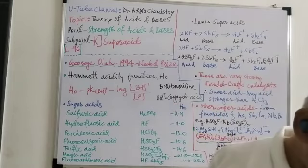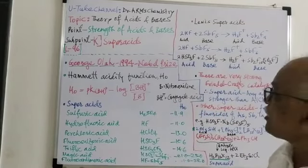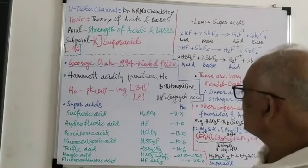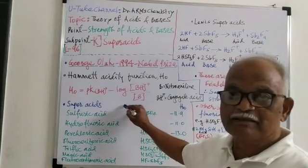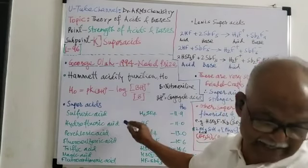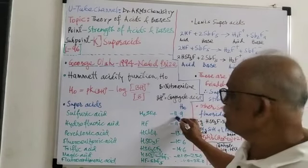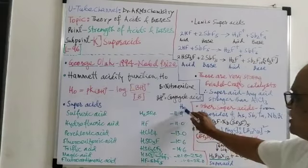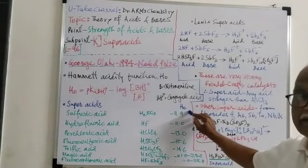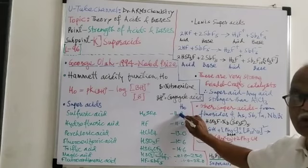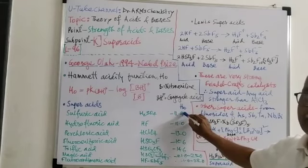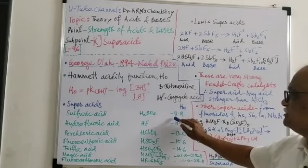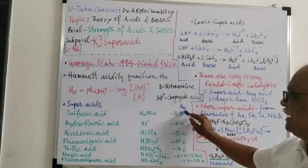Depending upon this, the strength of these acids can be understood. We can consider various examples of the super acids. The negative value, more negative value of this Hammett acidity function H0, indicates that the acidity is stronger. It means it is super acid and the strength of that acid is also stronger if the negative value of H0 is more.